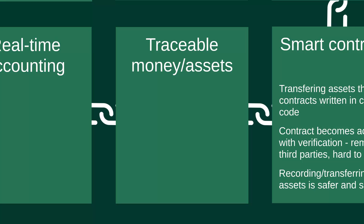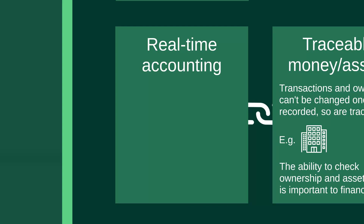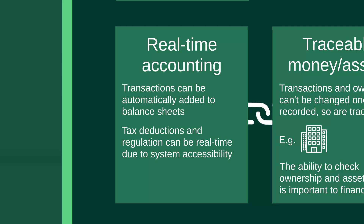The next benefit is that money and assets are traceable. Transactions and ownership are entirely traceable as a record can't be changed after it's made. For example, if an asset such as an office building was bought by a business in 2017 and recorded in the blockchain, there would forever be evidence that the business owned that asset at that time — especially important in the finance profession. The last benefit is real-time accounting. As blockchain records all transaction details and they've been validated, these could be added to balance sheets in real time. Tax administrators could access transactions to calculate and deduct tax in real time, and stakeholders and regulators could also access transactions in real time, reducing the need for annual financial reports.